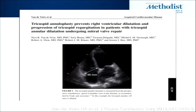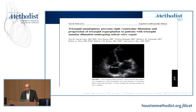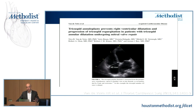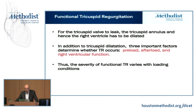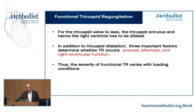Most commonly, the measurement of the maximum diameter of the tricuspid annulus is made on the preoperative transthoracic echo in the four-chamber view in end-diastole. For the tricuspid valve to leak, the tricuspid annulus — and hence the right ventricle — has to be dilated. In addition to tricuspid dilatation, there are three important factors which determine whether tricuspid regurgitation occurs: preload, afterload, and RV function.